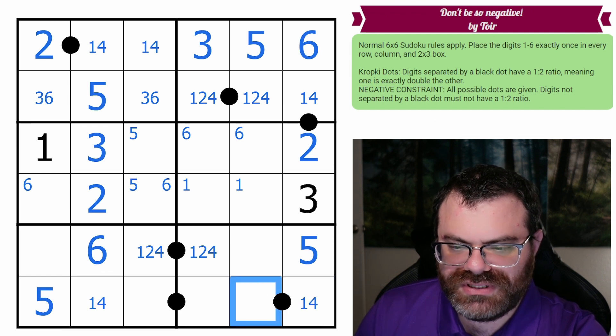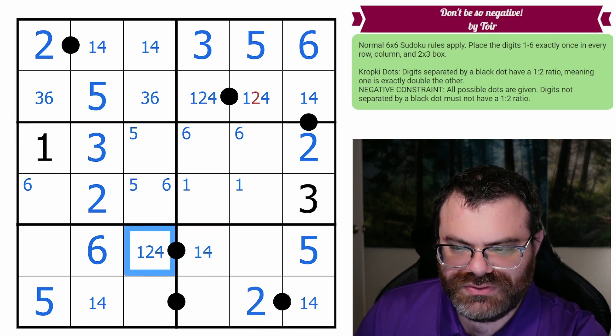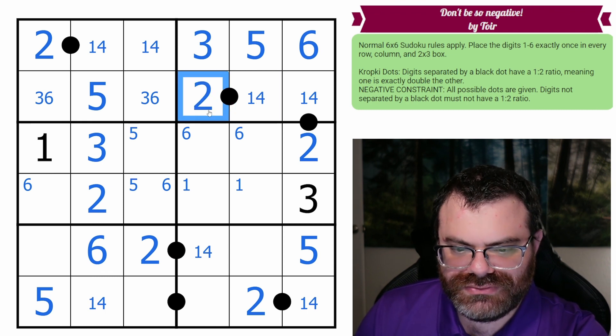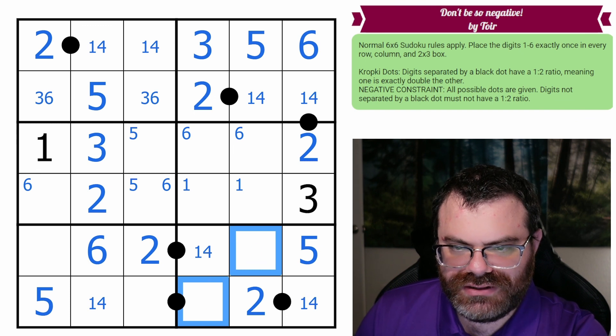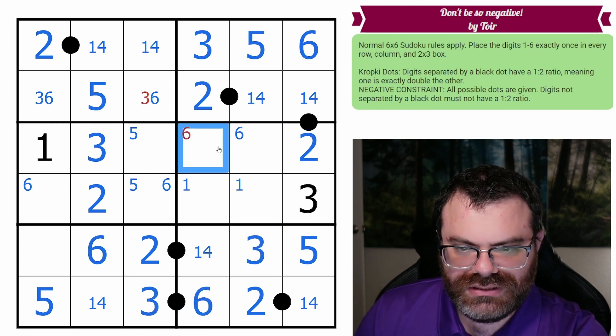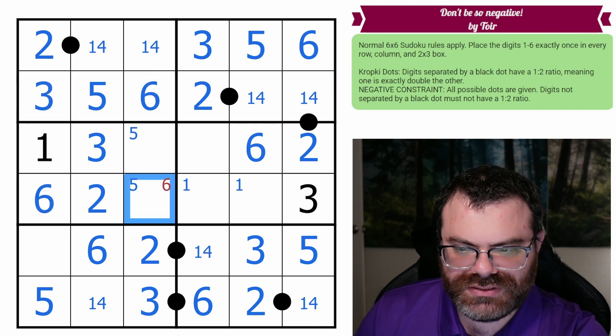This is a one or a four, which must be next to a two. That's not a two. So that is a two. That's not a two. So that is a two. Twos are done. This is a three, six pair. We know the order. It makes that a three. Places the six, the six, the three, places this six.